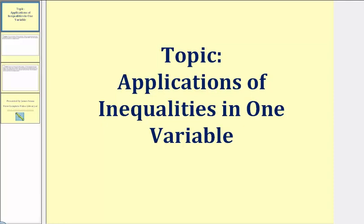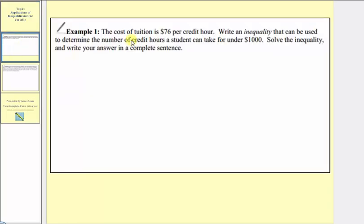Welcome to a lesson in which we'll solve two application problems using an inequality in one variable. In our first example, the cost of tuition is seventy-six dollars per credit hour. We want to write an inequality that can be used to determine the number of credit hours a student can take for under one thousand dollars, solve the inequality, and write the answer in a sentence.